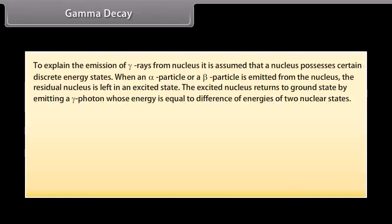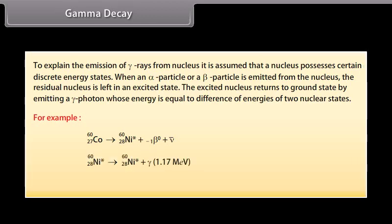Gamma decay. To explain the emission of gamma rays from nucleus, it is assumed that a nucleus possesses certain discrete energy states. When an alpha particle or a beta particle is emitted from the nucleus, the residual nucleus is left in an excited state. The excited nucleus returns to ground state by emitting a gamma photon whose energy is equal to difference of energies of two nuclear states. For example, Cobalt nucleus with mass number 60 and atomic number 27 transforms into nickel nucleus with mass number 60 and atomic number 28 in its excited state. The excited nickel nucleus returns into ground state by emission of two successive gamma photons of energies 1.17 MeV and 1.33 MeV.